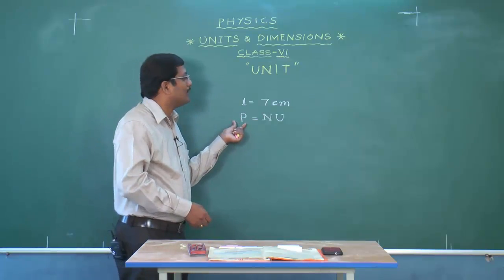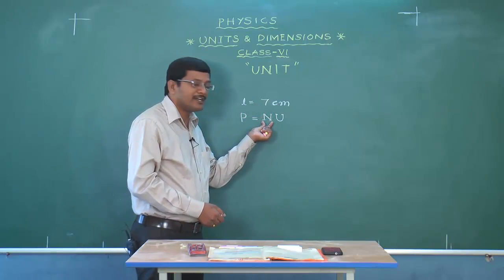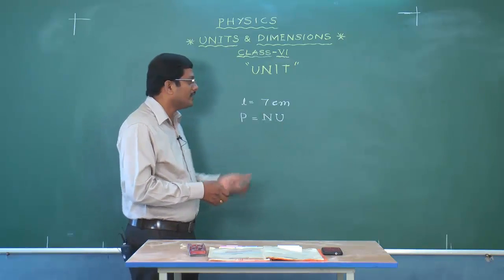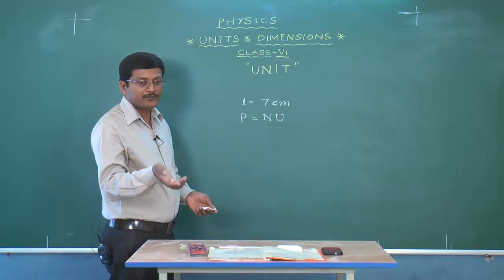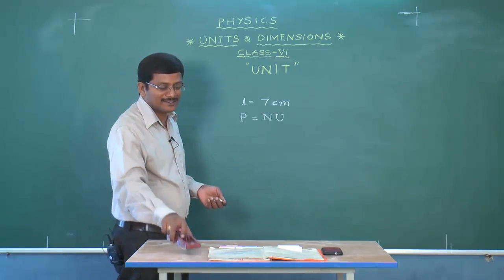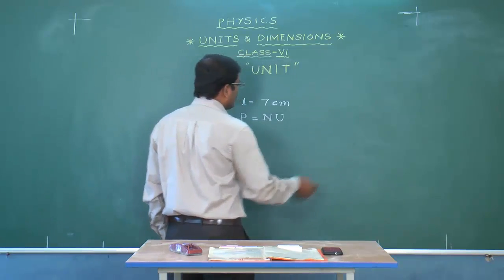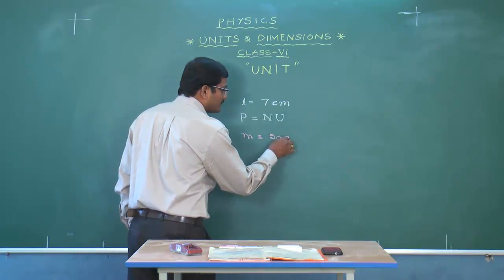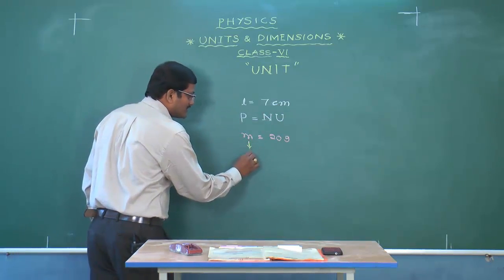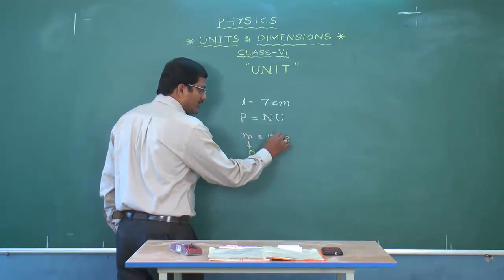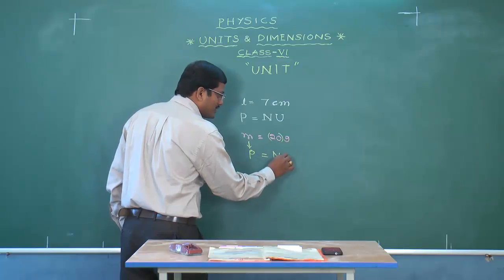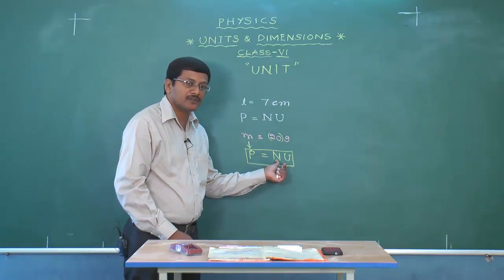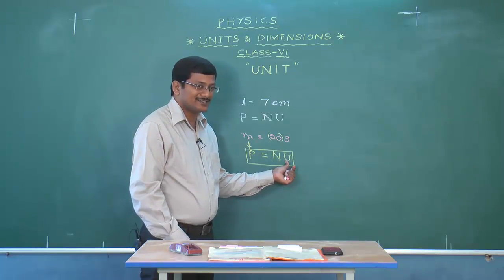Every physical quantity is expressed in terms of a numerical value followed by a unit. Similarly, if we find the mass of an object — say m = 20 grams — mass is the physical quantity, 20 is the numerical value, and gram is the unit. So a physical quantity P = N × U.